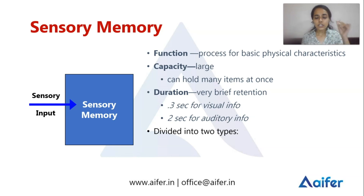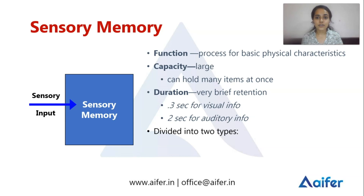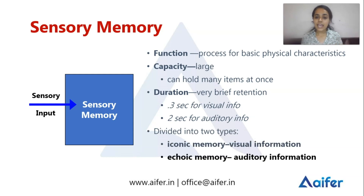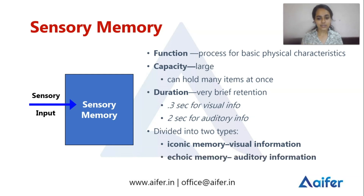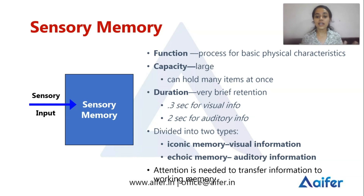There are mainly two types of sensory memory: iconic memory, which is for visual information, and echoic memory, which is for auditory information. Attention is needed to transfer information from sensory memory to working memory.